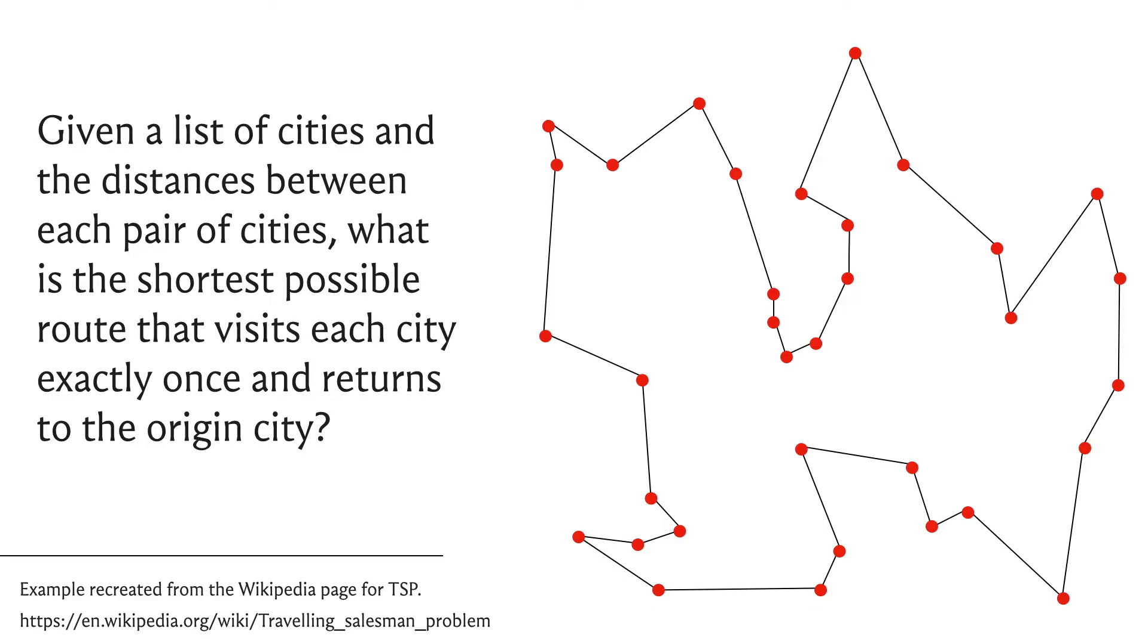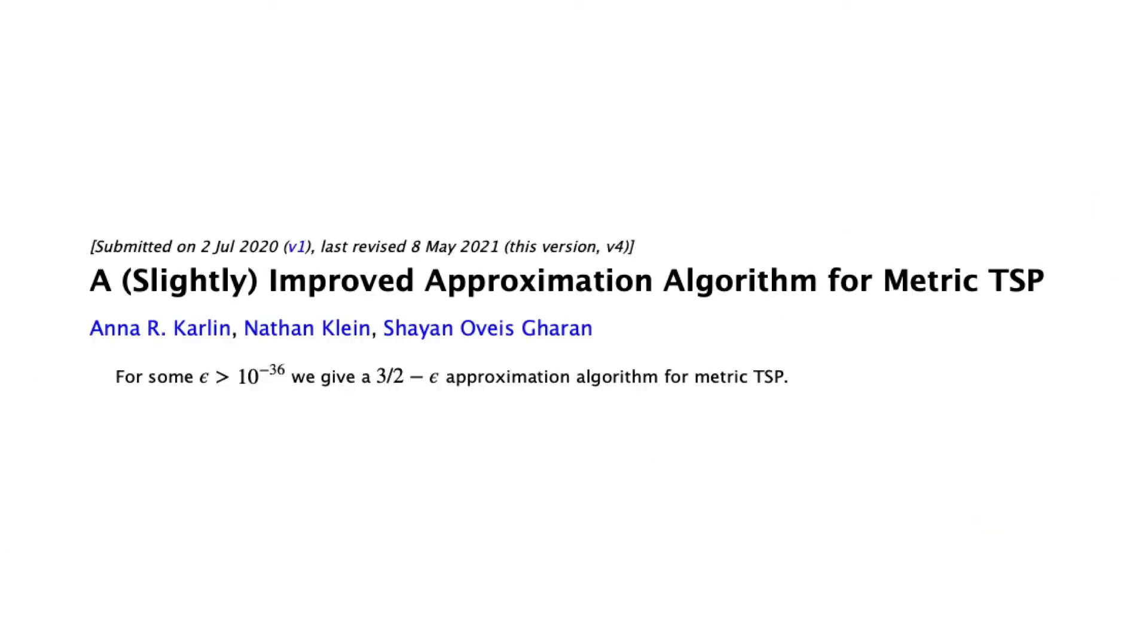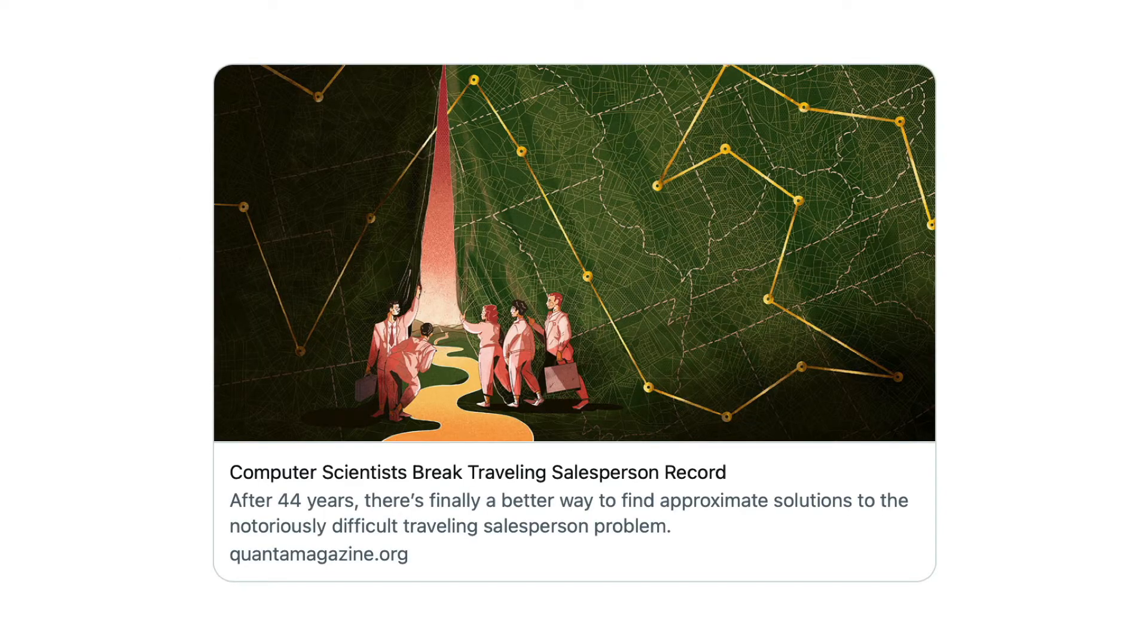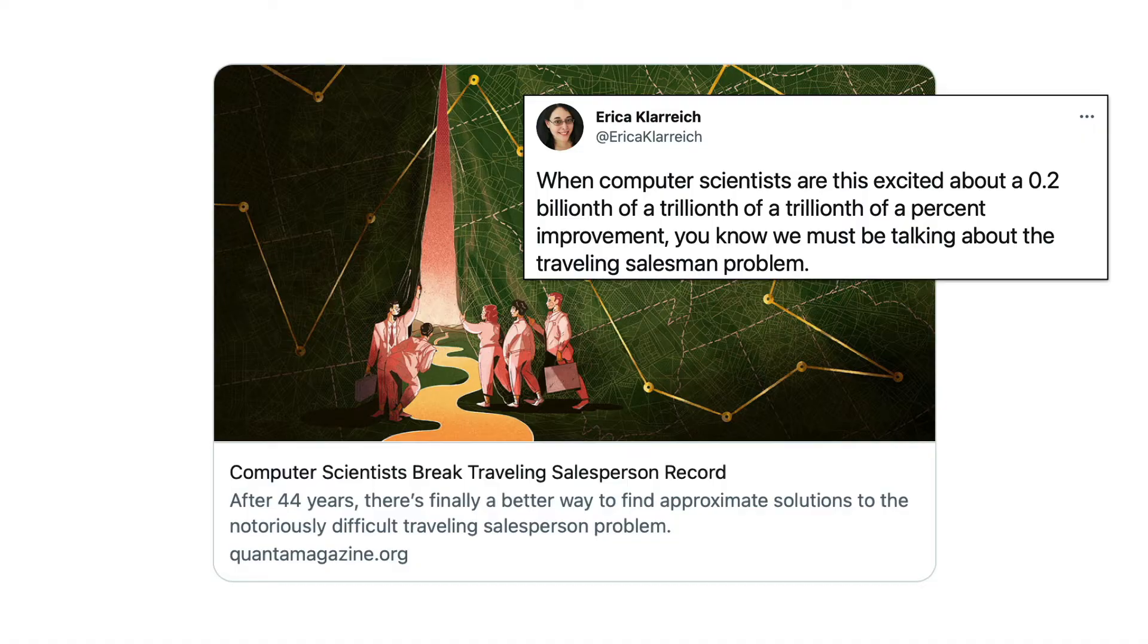The traveling salesman problem is an active topic of research in computer science. A paper appeared in 2020 giving an improvement that's been long sought after. Despite the improvement appearing small from the abstract, it caused much excitement. I encourage you to read the Quanta Magazine article covering this development and the interesting history of the problem.